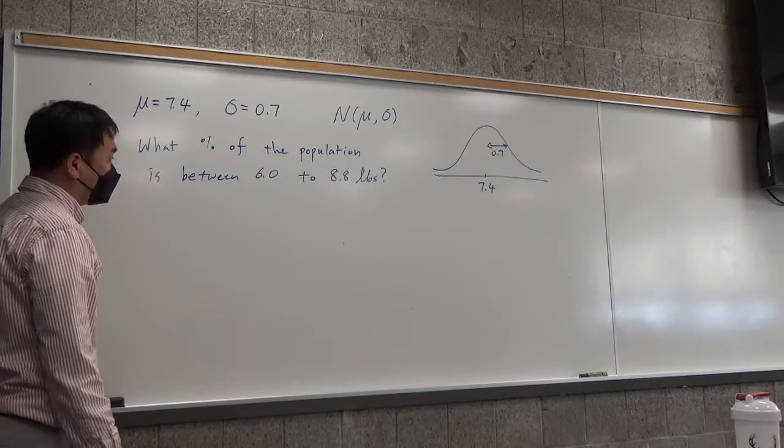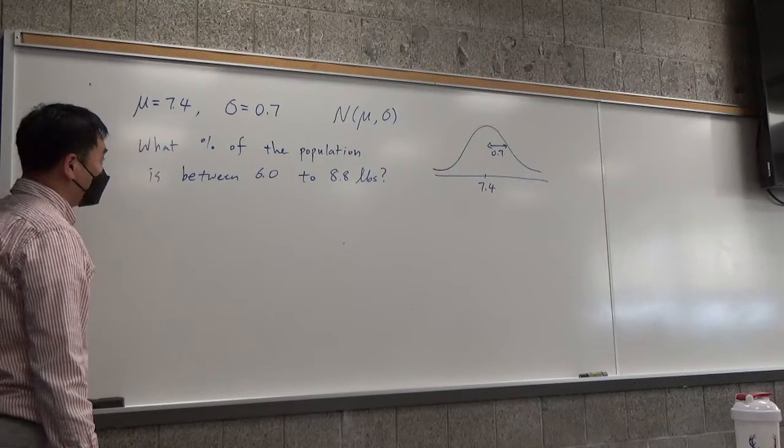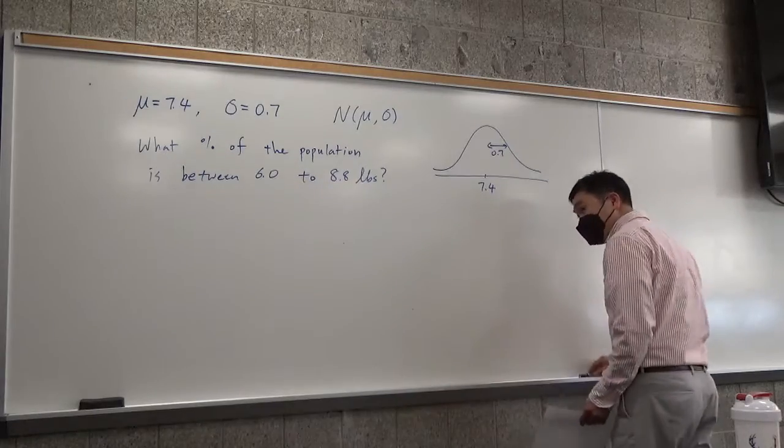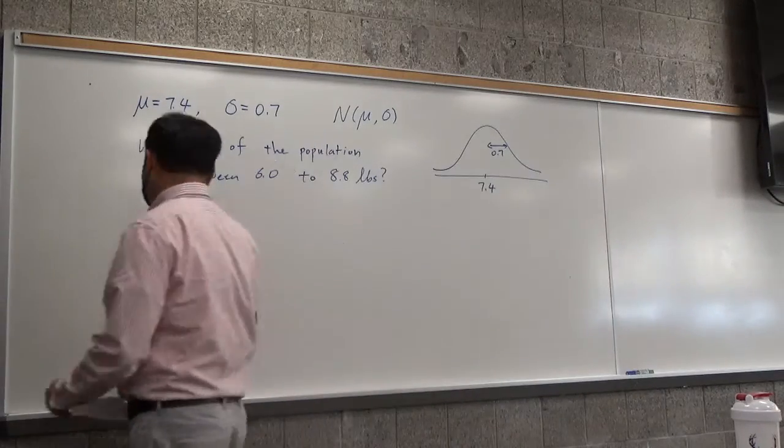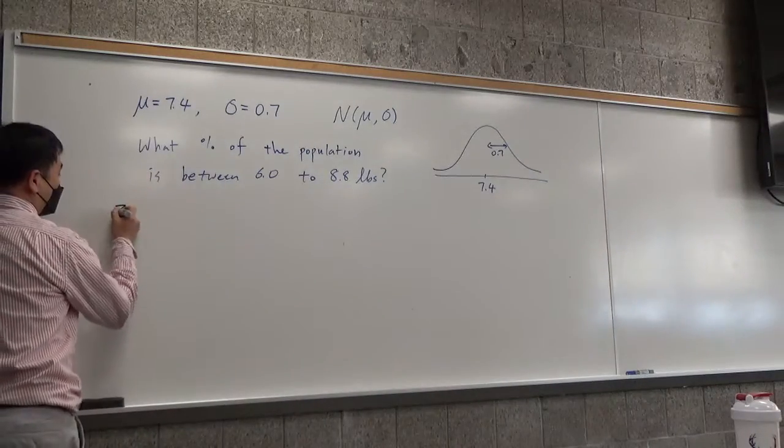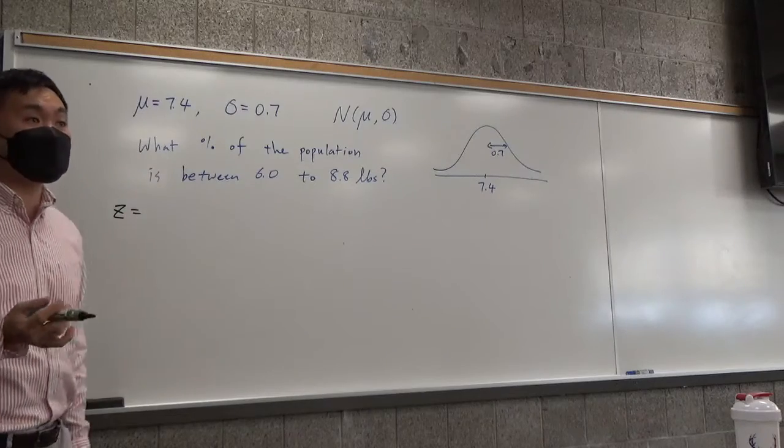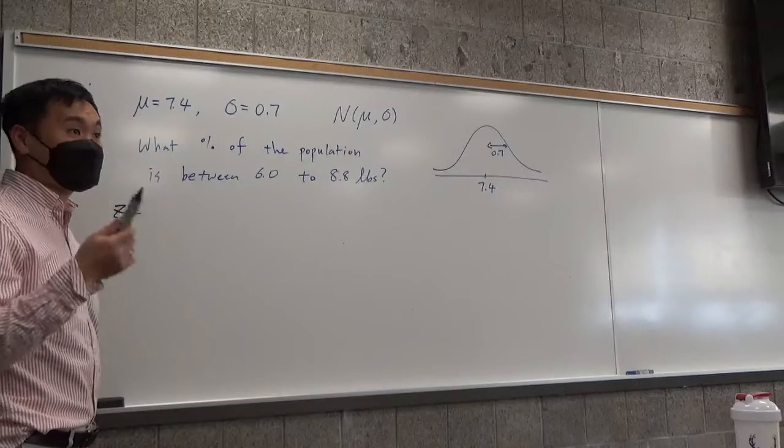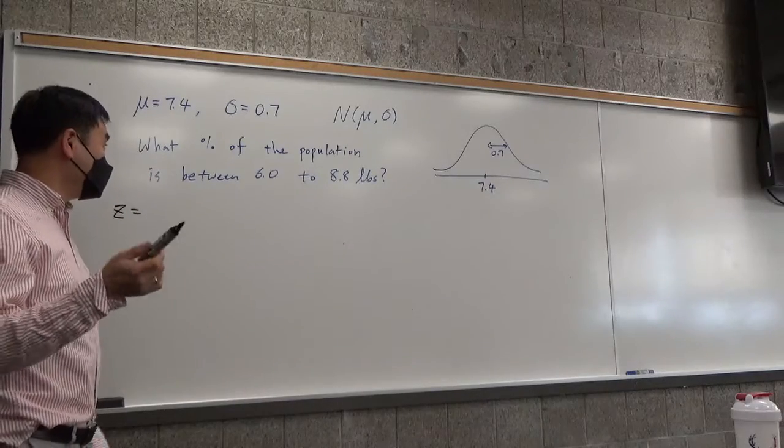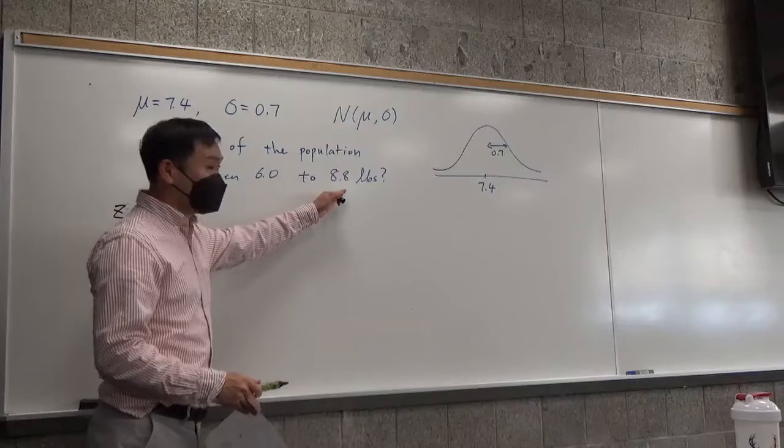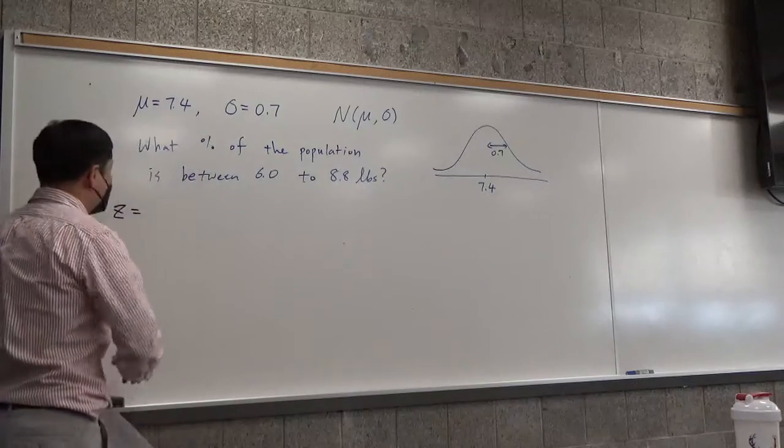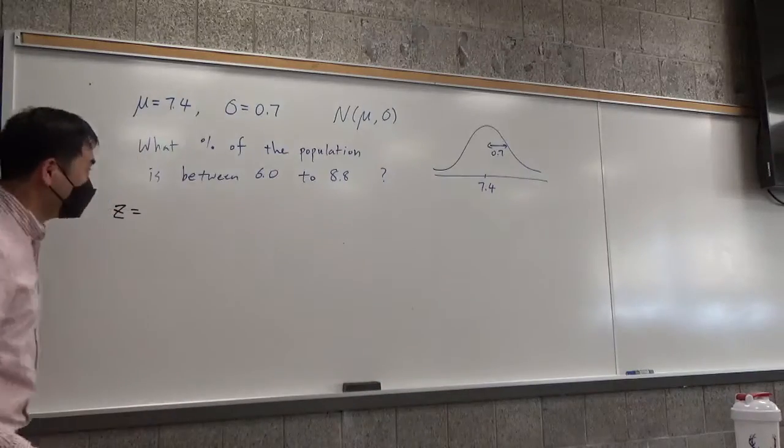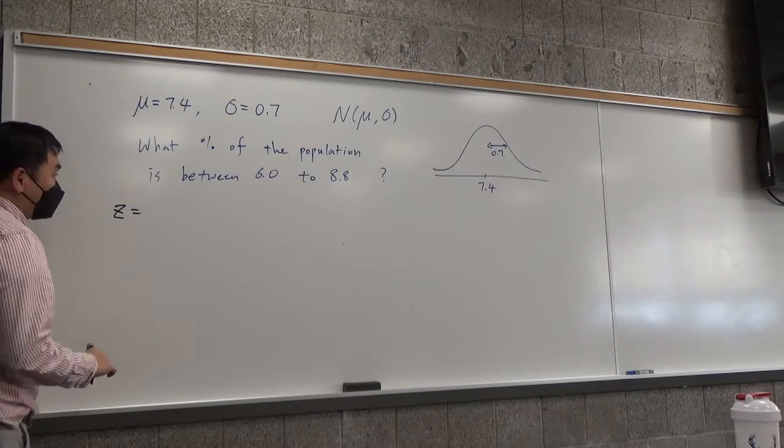So how do you do this? Well, the way you solve this is by calculating the z-score. Because what's the meaning of the z-score? It tells you how many multiples of the standard deviation these individual numbers are from the mean, away from the mean. By the way, I didn't put any units on the board, so let me just write it like that.